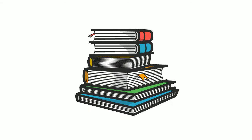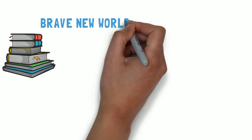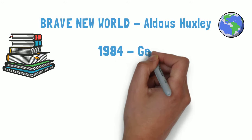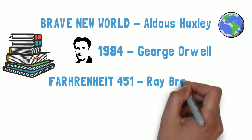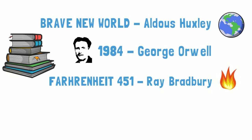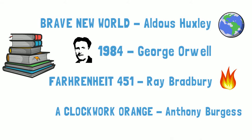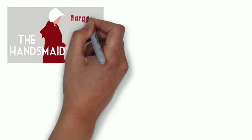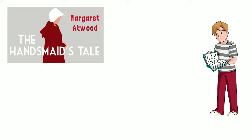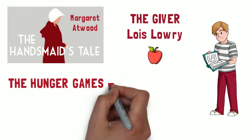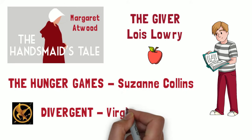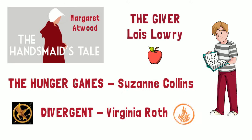Some famous novels in the dystopian genre include Brave New World by Aldous Huxley, 1984 by George Orwell, Fahrenheit 451 by Ray Bradbury, and A Clockwork Orange by Anthony Burgess. There are also contemporary examples, such as The Handmaid's Tale by Margaret Atwood, and those geared for young adult readers, such as The Giver by Lois Lowry, The Hunger Games by Suzanne Collins, or Divergent by Veronica Roth.